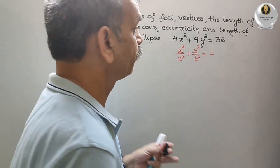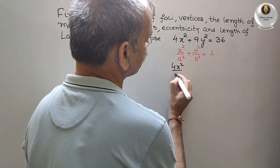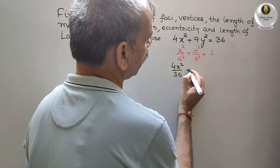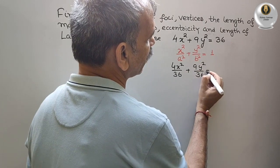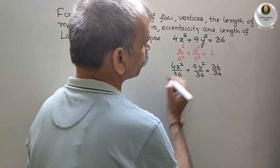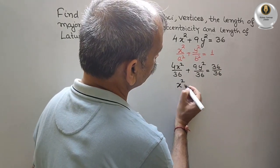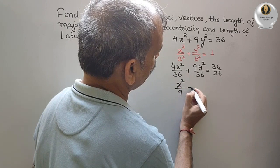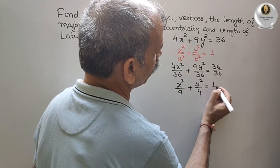We will get what? Here it will be 4x²/36 + 9y²/36 = 36/36. Just reduce it. You will get x²/9 + y²/4 = 1.